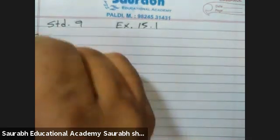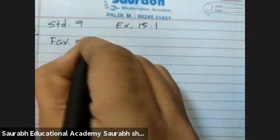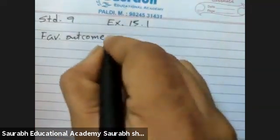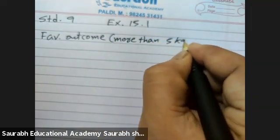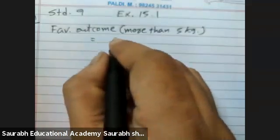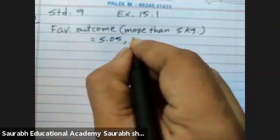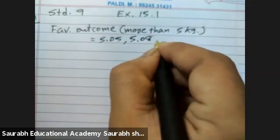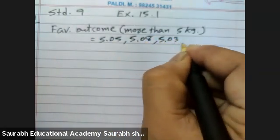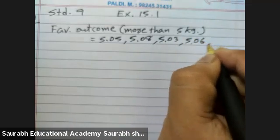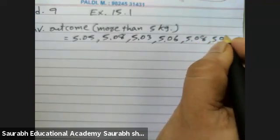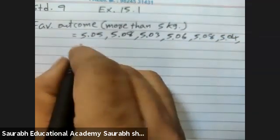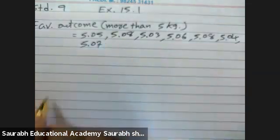So first we should find the favorable outcomes — that is, bags with more than 5 kg. How many are there? 5.05, 5.08, 5.03, 5.06, 5.08, 5.04, 5.07.